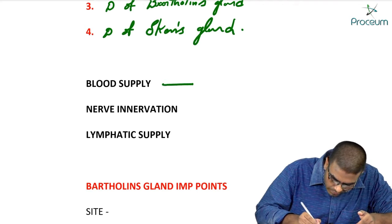The blood supply to the vagina comes from the descending vaginal artery, the internal pudendal artery, and the middle rectal artery. These three blood vessels provide blood supply to the vagina.